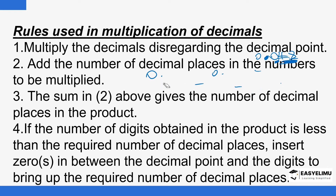So that's what we mean by the rules used in multiplication. Take note: number one, we disregard the decimal point. Number two, we add the decimal places in each number being multiplied to give the number of decimal places in the product. And if the number of digits obtained in the product is less than the required number of decimal places, remember to fill up the difference using zeros inserted between the decimal point and the digits obtained. We'll see how that's done as we continue with the lesson.